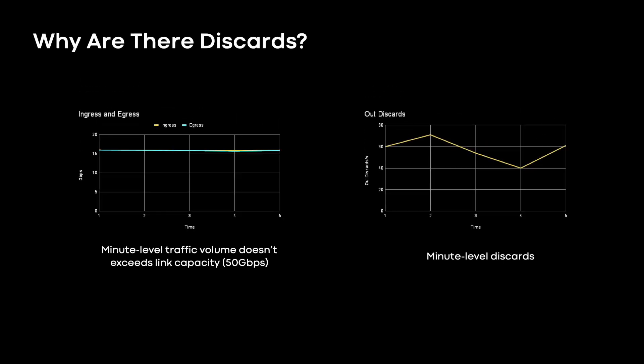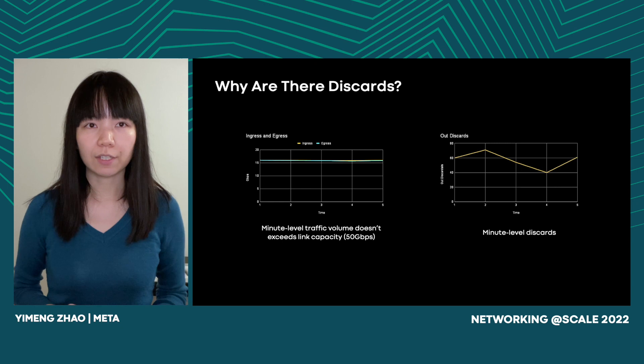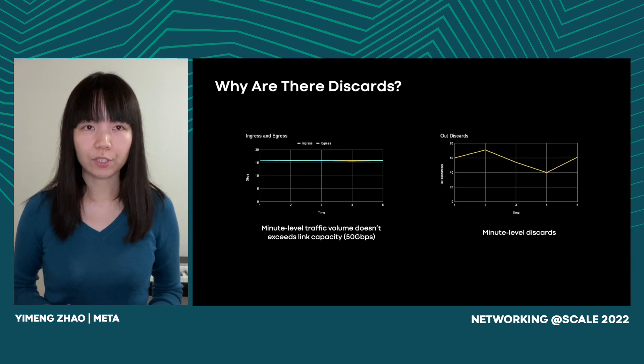I'd like to share one of our investigation stories in the production network. If we check the traffic metrics on the left, we can see that during the 5-minute interval, the ingress and egress traffic are pretty stable — about 15 Gbps per second, and it doesn't exceed the link capacity. But if we check the discards metrics on the right, we can see that at every minute there are constant discards. So this leads to a question: if our link is not oversubscribed, where do these discards come from?